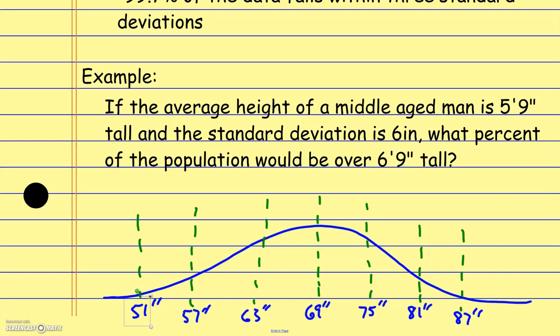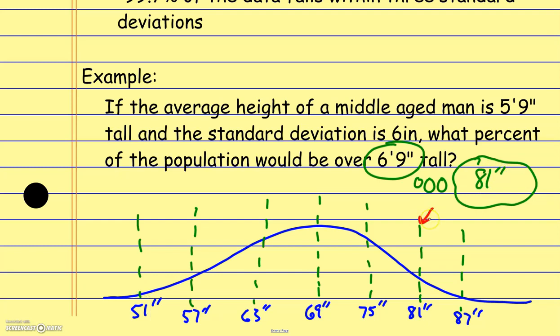The mean was five foot nine inches — I was mistakenly saying six foot nine. The question is asking how many people are going to be over six feet nine inches tall. In terms of inches, that's 81 inches. So basically the value we're looking at is right here at 81 inches, and we want to know how many people are going to be taller than that.